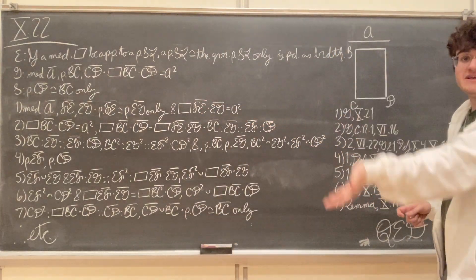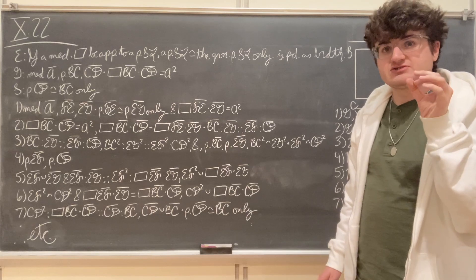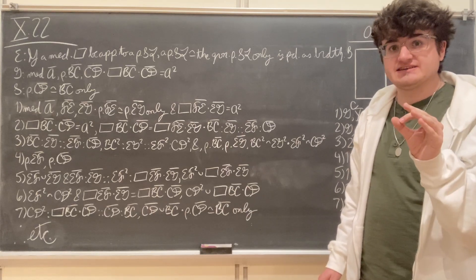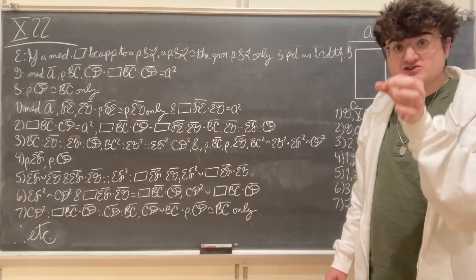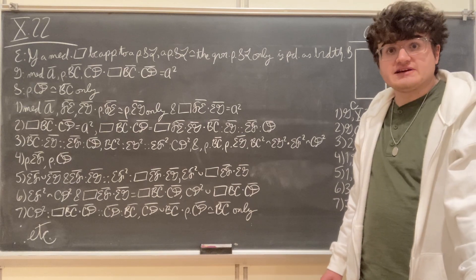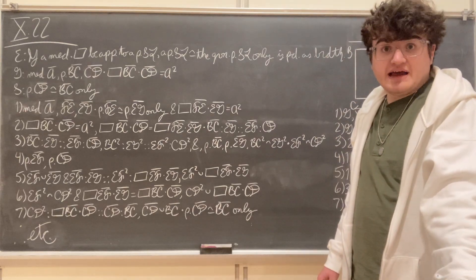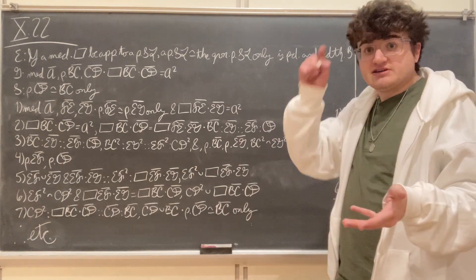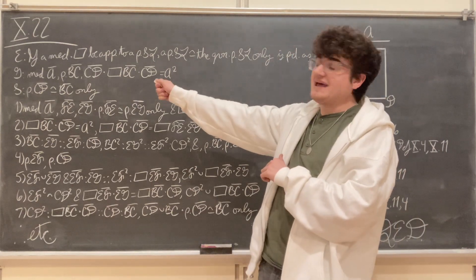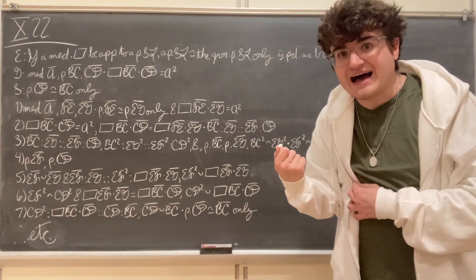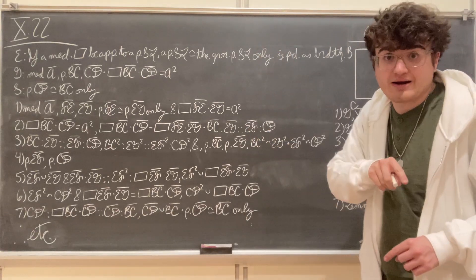Because A is a medial straight line — it was given to us as such — we know, based on how medial straight lines were defined in Proposition 10.21, that there must exist two rational straight lines commensurable in square only such that the rectangle contained by them is equal to the square on A. That's how we defined medial straight lines: they are the mean proportional to two rational straight lines commensurable in square only, so that the existence of medial straight line A automatically implies two such rational straight lines whose rectangle equals A squared.